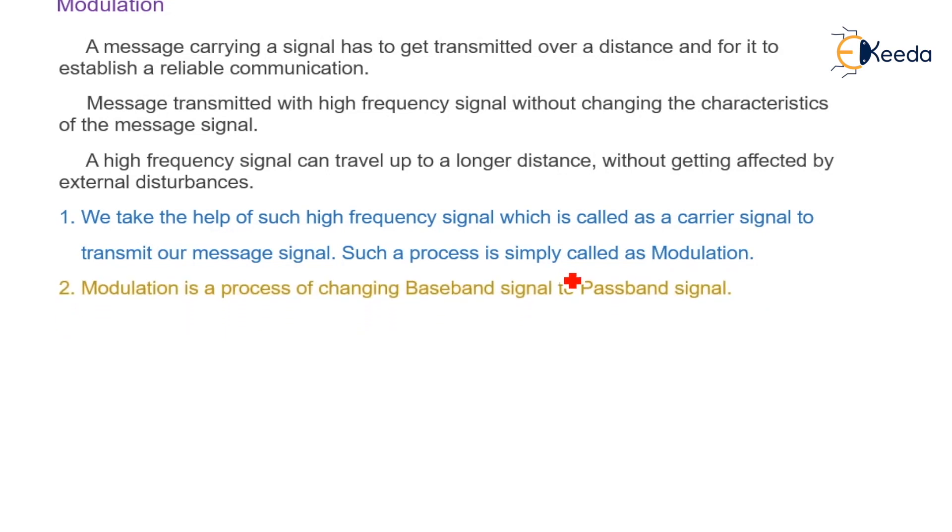Second, modulation is the process of changing baseband signal to passband signal. Baseband signal is the original information signal without modulation, and passband signal is nothing but a modulated signal.